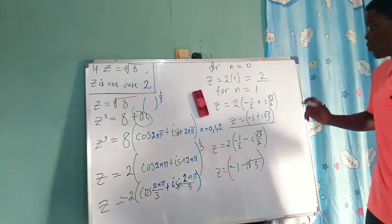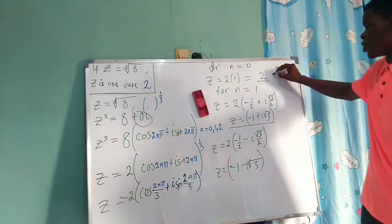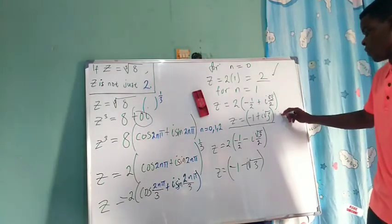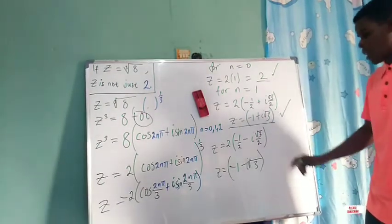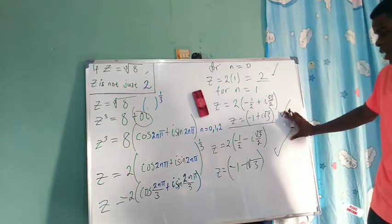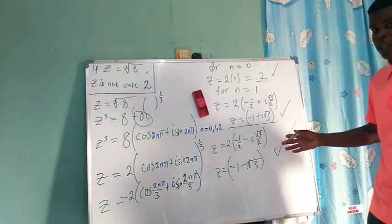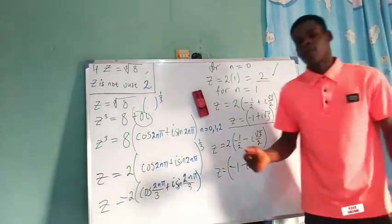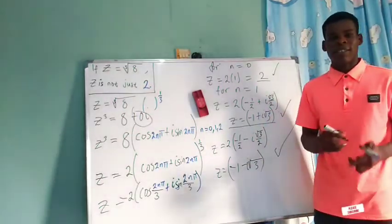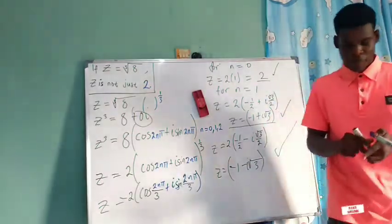So we have three cube roots of 8: z equals 2, z equals negative 1 plus i√3, and z equals negative 1 minus i√3. Cubing each of them gives 8. Note that the two complex roots are conjugates of each other. Thanks for watching this video — please subscribe to this channel.